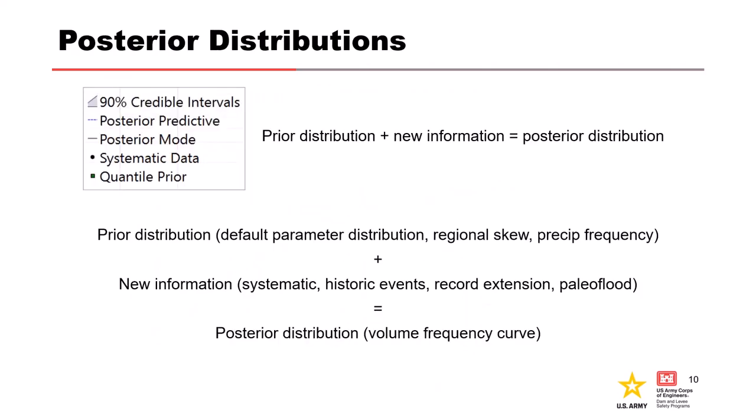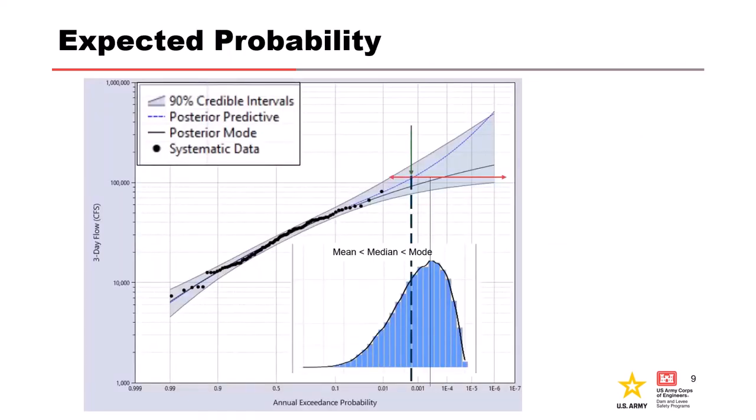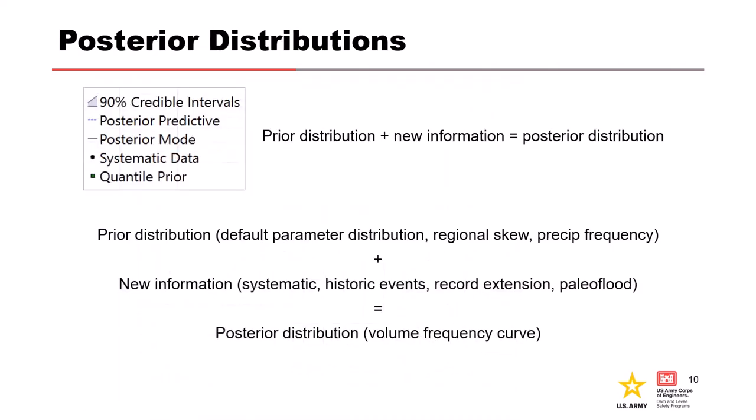Additionally, the expected probability curve is called the posterior predictive curve. And the mode curve is in Bayesian terms called the posterior mode curve. As you will learn in a future lecture, the posterior references the addition of new information that we add to the initial or prior distribution.